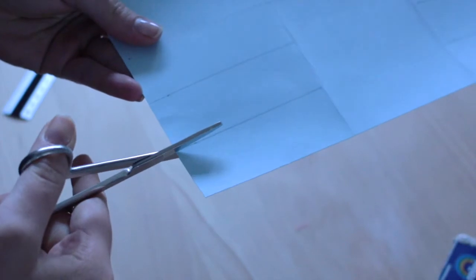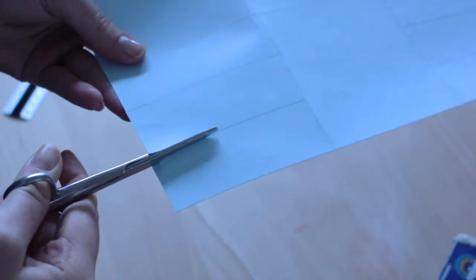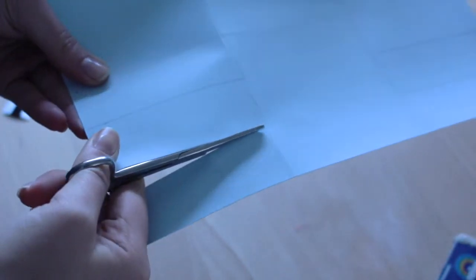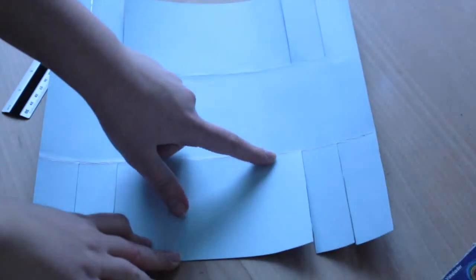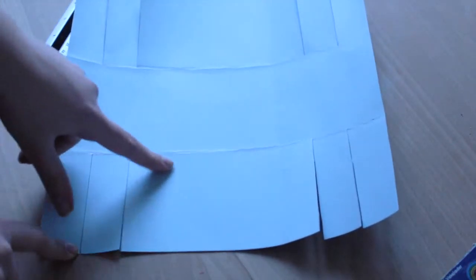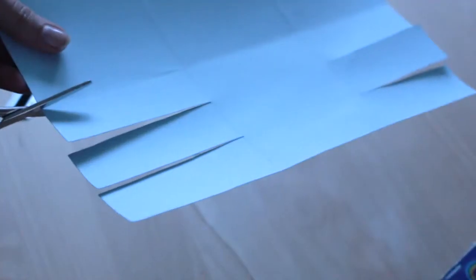Then take your scissors and cut all the lines. Remember to cut the scoring lines in between the middle ones and the outer ones.